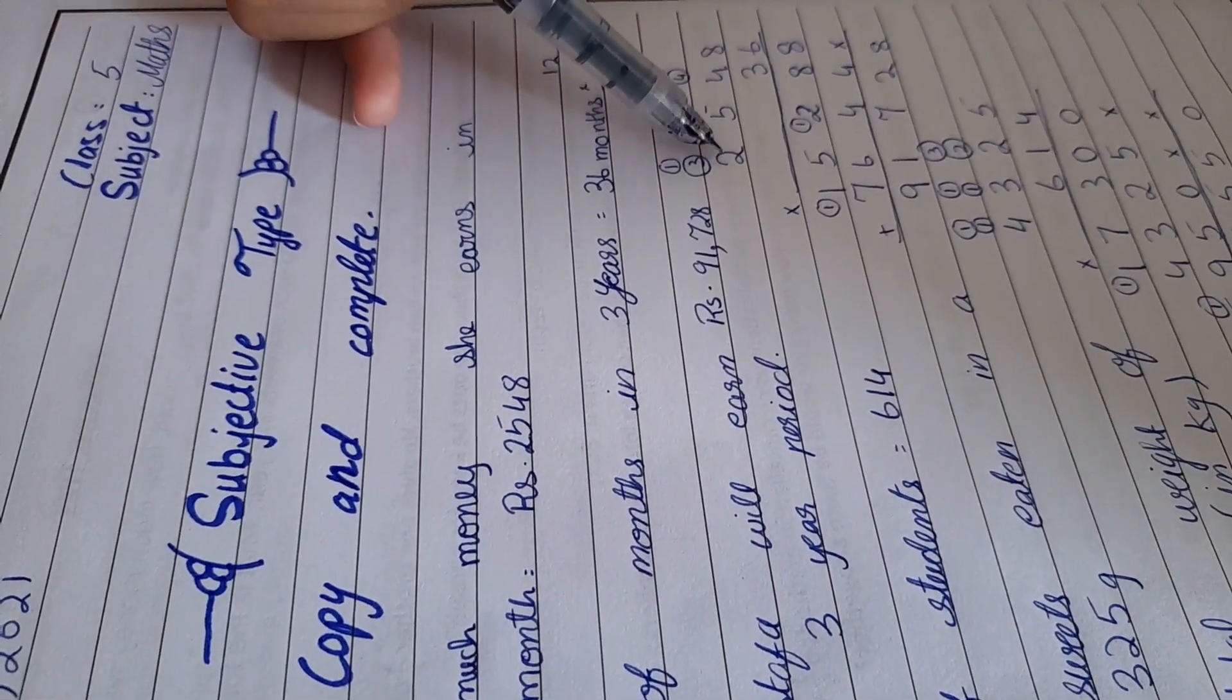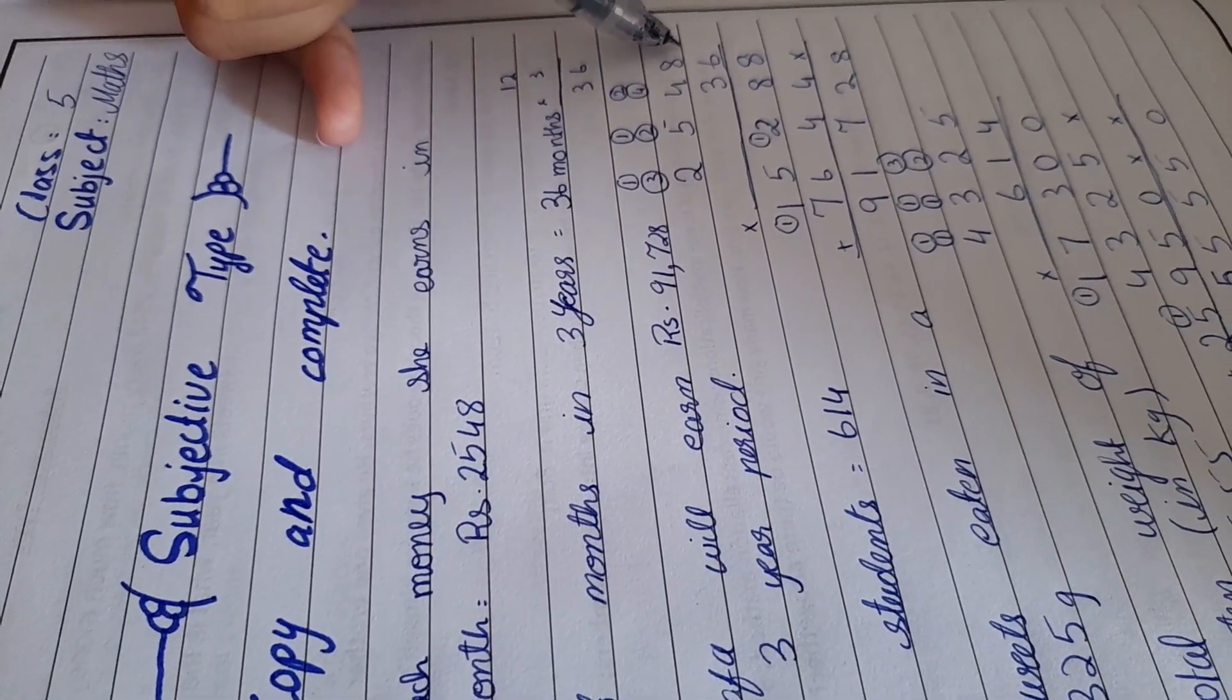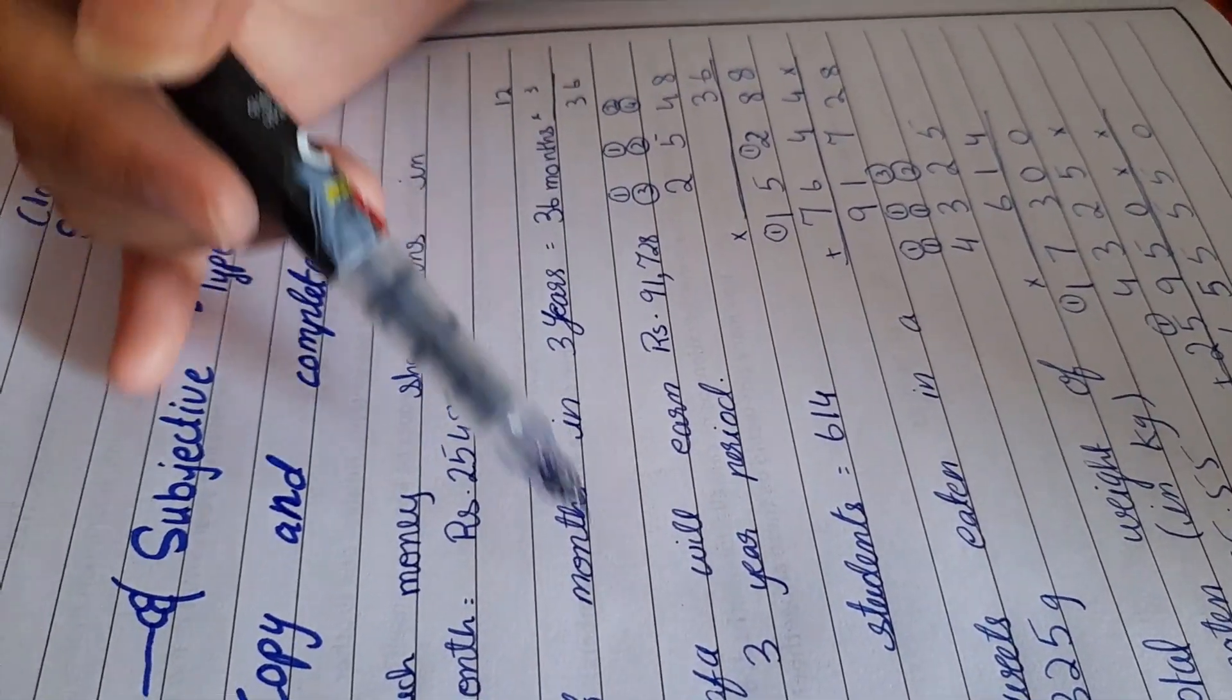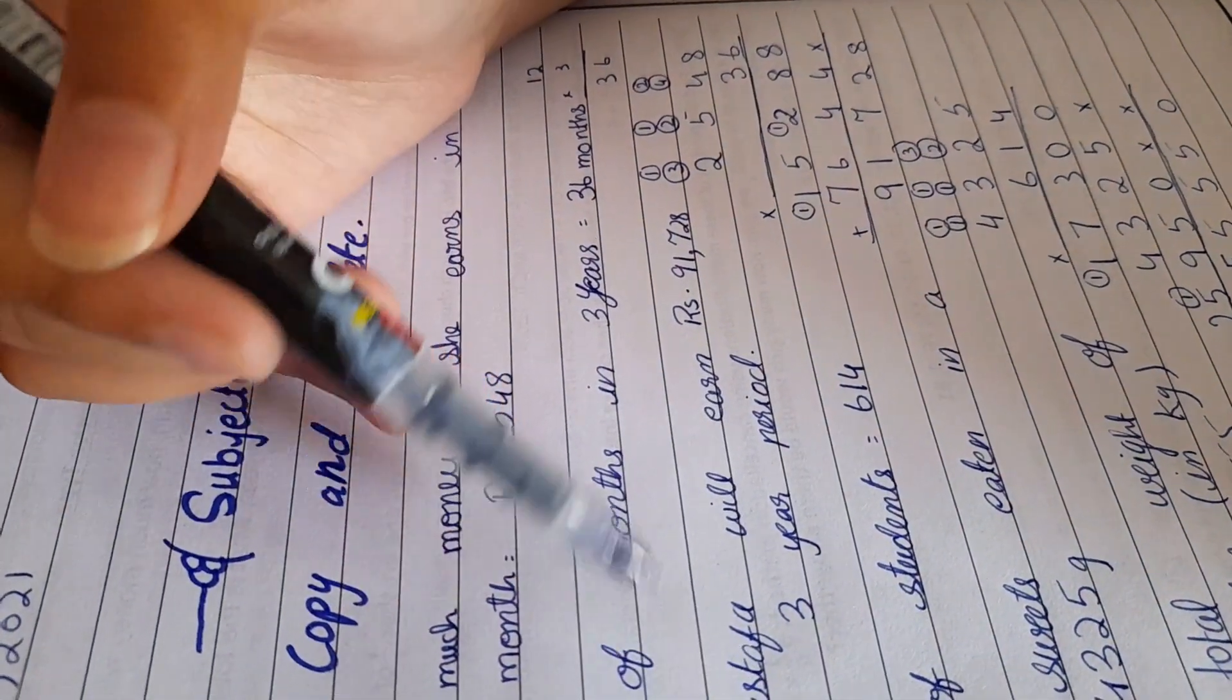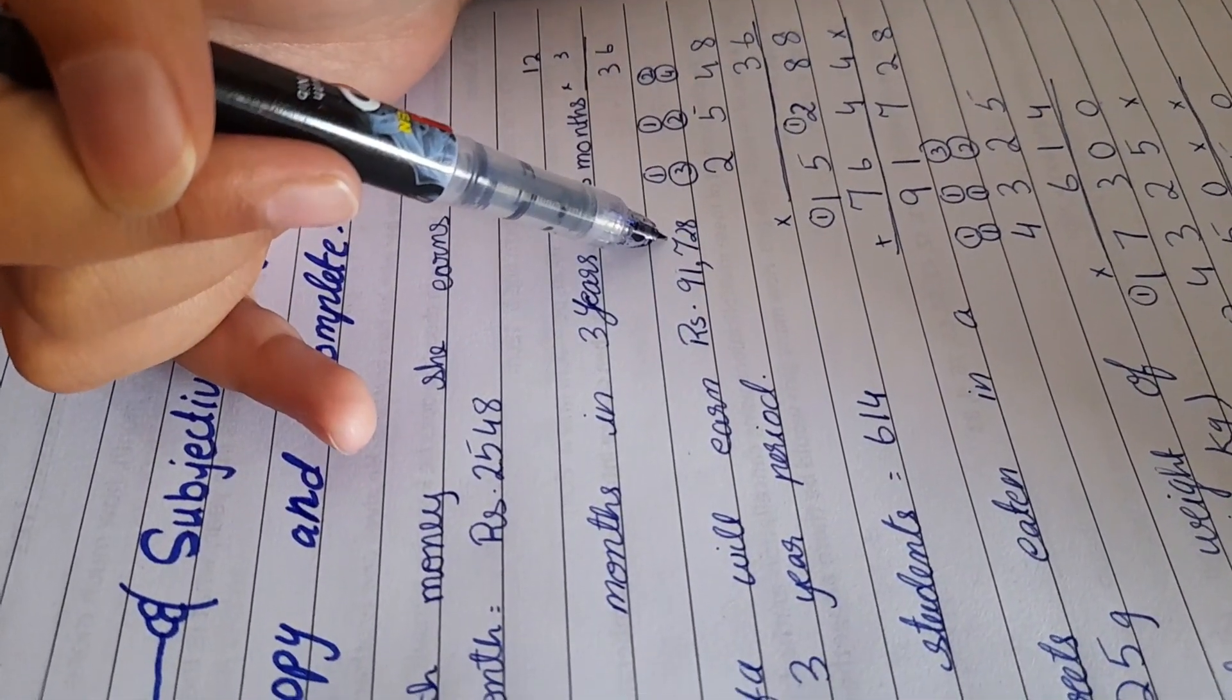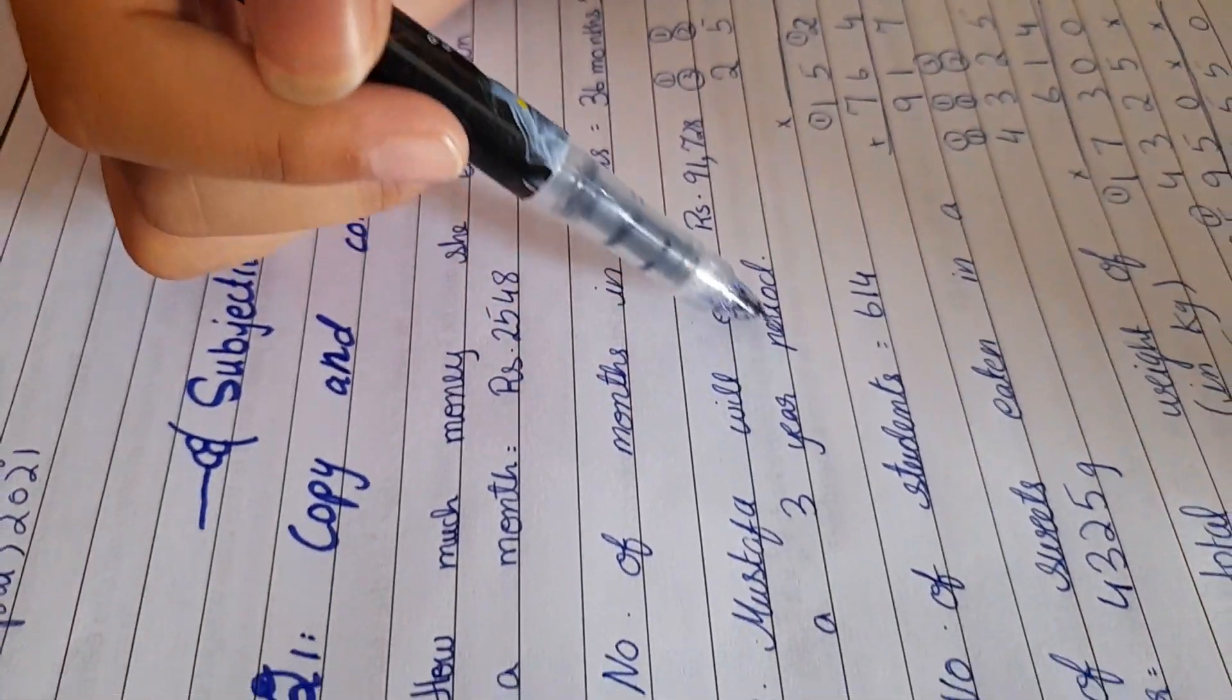Next, we have to multiply Rs. 2,548 with 36 months and we get the answer. Ms. Mustafa will earn Rs. 91,728 in a three-year period.